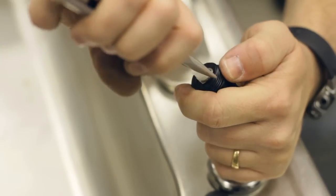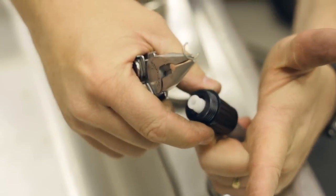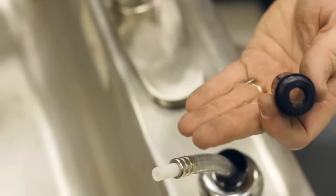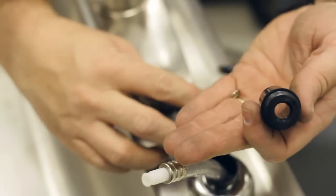You remove the C-clip, remove the nut, and then you just go down, buy yourself a new spray head, and you can put it all back together.